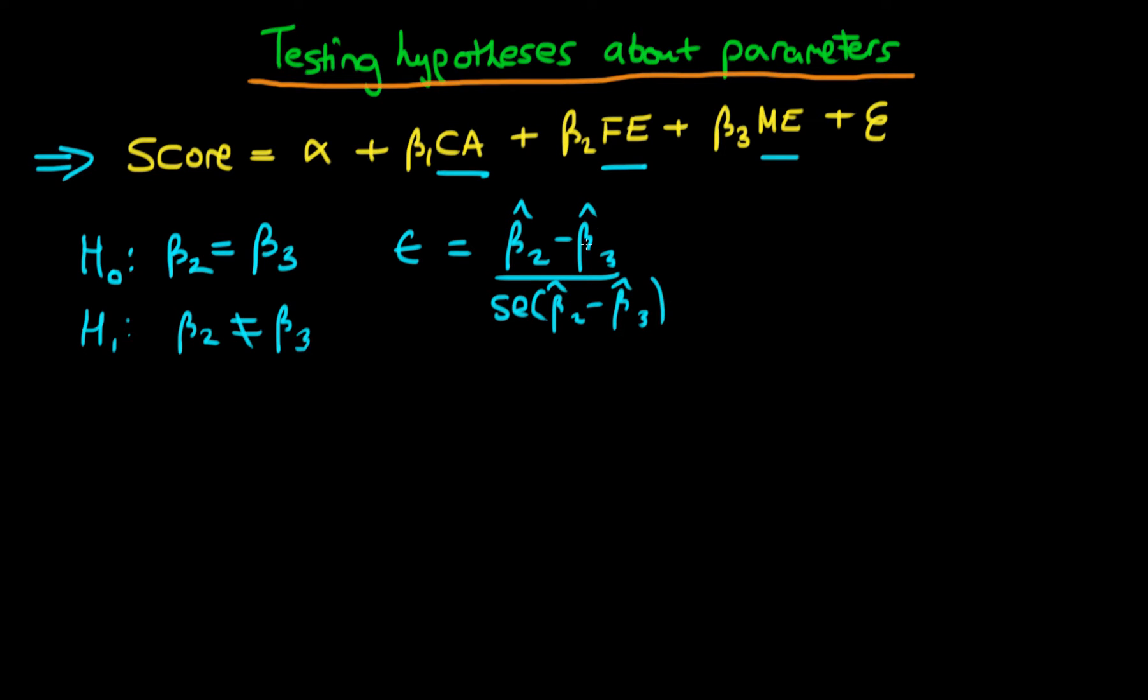We spoke about how this can be a little bit roundabout to get there because you have to actually get the estimate of the covariance between these two parameters in order to evaluate the denominator. So I was starting to suggest an alternative. Remember that this implies that beta2 minus beta3 should be equal to zero.